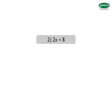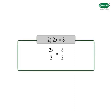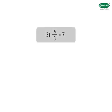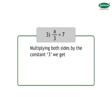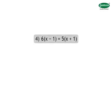4. 6 into x minus 1 is equal to 5 into x plus 1. Therefore, the above given equation becomes 6 into x minus 6 into 1 is equal to 5 into x plus 5 into 1. Therefore, 6x minus 6 is equal to 5x plus 5. By rearranging the terms, we get 6x minus 5x is equal to 5 plus 6. Therefore, x is equal to 11.